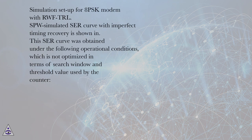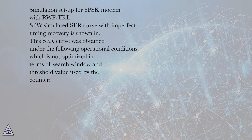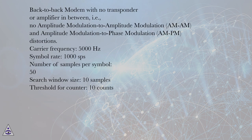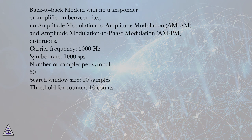Simulation Setup for 8PSK Modem with RWF TRL. The SPW simulated SARE curve with imperfect timing recovery was obtained under the following operational conditions, which are not optimized in terms of search window and threshold value: back-to-back modem with no transponder or amplifier (no AM-AM or AM-PM distortions); Carrier Frequency: 5000 Hz; Symbol Rate: 1000 SPS; Number of Samples per Symbol: 50; Search Window Size: 10 samples; Threshold for Counter: 10 counts.